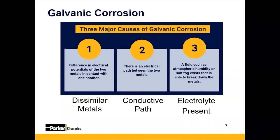The second factor is an electrical path between the two metals, also known as a conductive path. A lot of the time when it comes to EMI shielding, that's met by an EMI gasket, a sealant, or a conductive paint. Finally, the last major cause is the presence of an electrolyte, which typically is a fluid such as atmospheric humidity or salt fog that ends up having the ability to break down either or both of the metals.